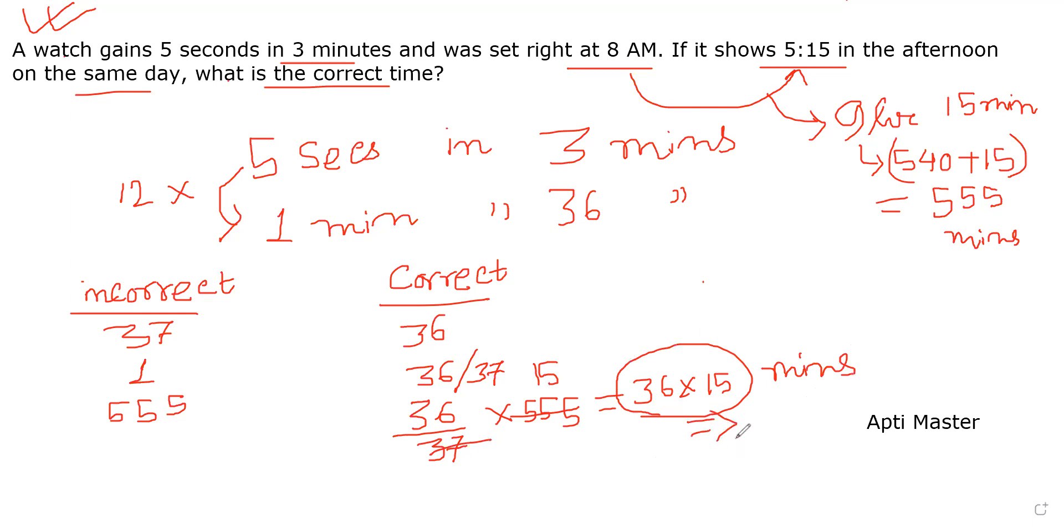This means how many hours? So 36 into 15 divided by 60, that many hours. 15 fours are 60, and 4 nines are 36, so 9 hours.